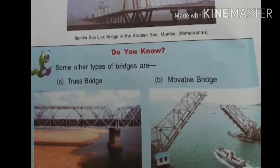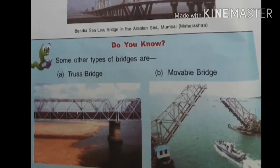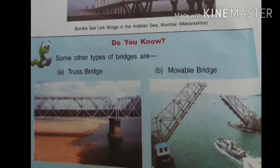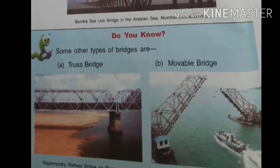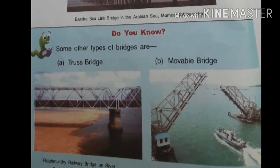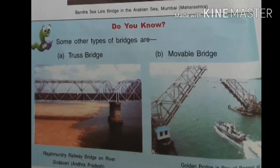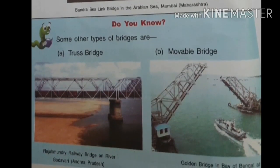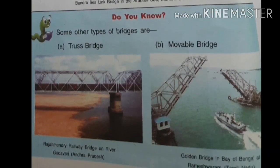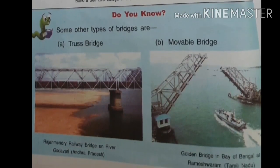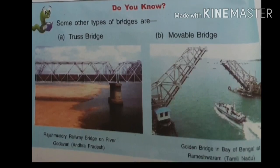The movable bridge is located in the Bay of Bengal at Rameswaram. The Golden Bridge in the Bay of Bengal is an example of a movable bridge, which can be moved when large ships pass under it, so the bridge can be separated into two parts.